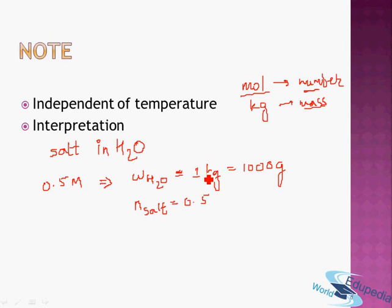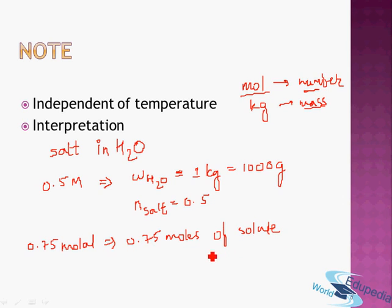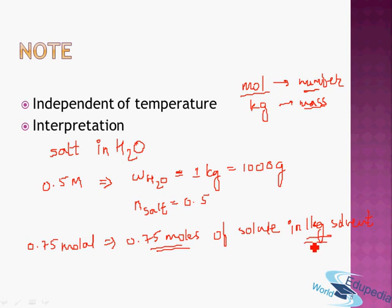So 0.5 molal means: if I have one kilogram of solvent, I have 0.5 moles of solute. Similarly, 0.75 molal means 0.75 moles of solute dissolved in one kilogram of water. This is how we interpret molality — converting a relative quantity into absolute quantities of solute and solvent. From moles of solute and mass of solvent, I can further calculate moles of solvent using moles = given mass divided by gram molar mass.